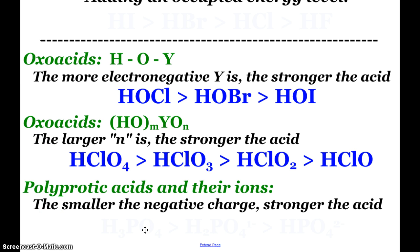And then our last situation is our polyprotic acids and their ions. The smaller the negative charge, the stronger the acid. So phosphoric, stronger than dihydrogen phosphate, stronger than hydrogen phosphate. Yay!